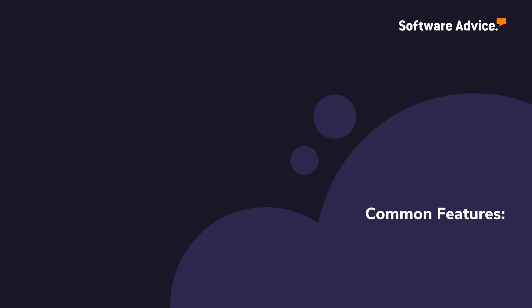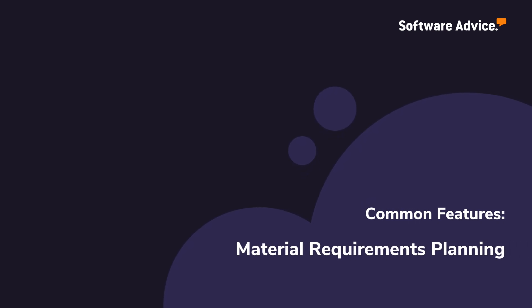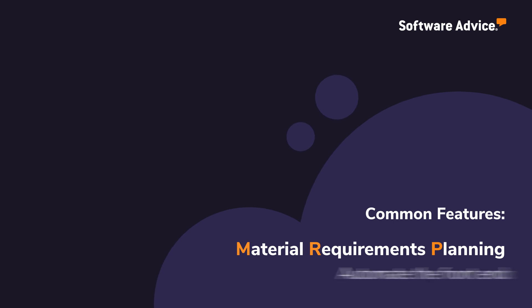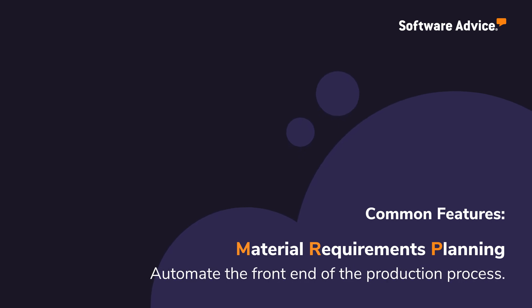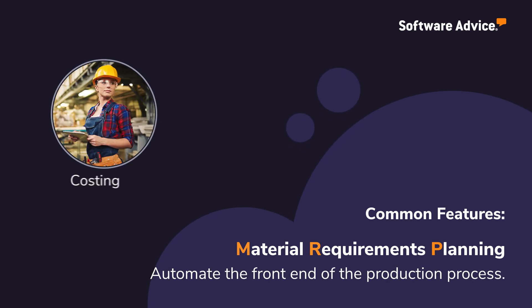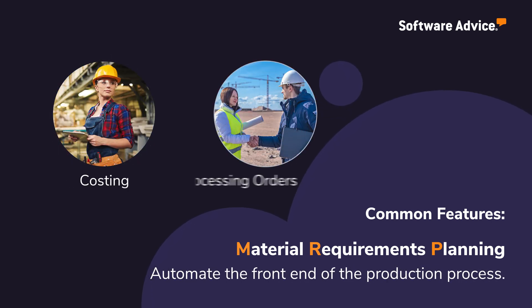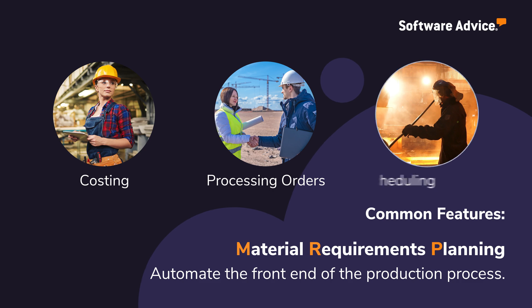Common features of manufacturing software include Material Requirements Planning, or MRP, which automates the front end of the production process by costing components and labor, and processing orders.